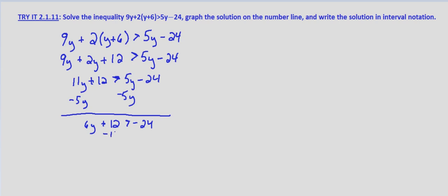Subtract 12 from both sides, we get 6y is greater than negative 36. Divide both sides by 6 and we get y is greater than negative 6.